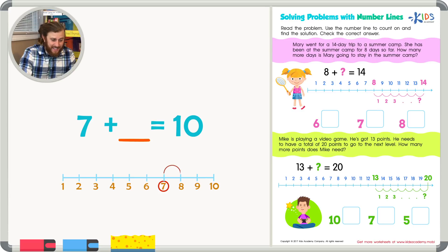7, 8, 9, and 10. How many jumps is that? That's 1, 2, 3.